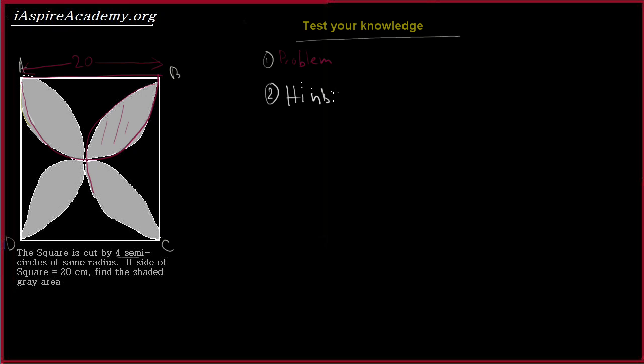So hint number 1. I think we have solved a similar problem before. Take one such square and see if you have to find out the shaded area then how can you express the shaded area. So let me draw this square here.